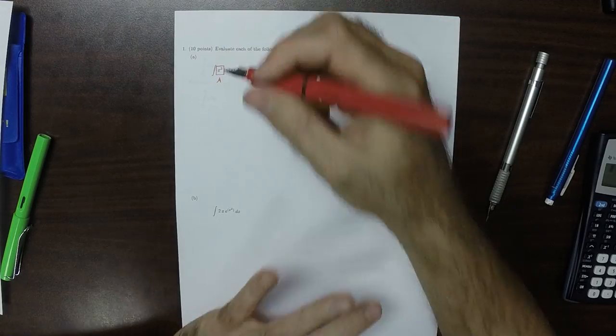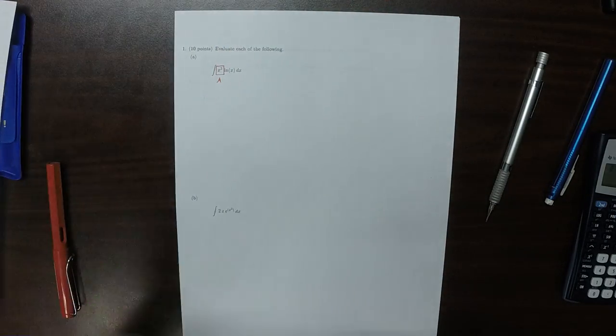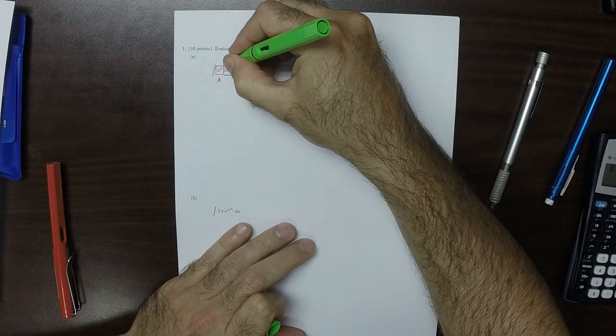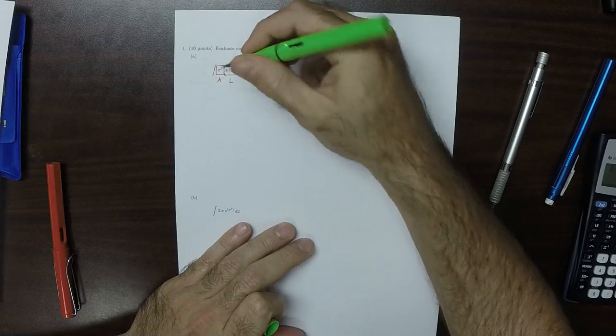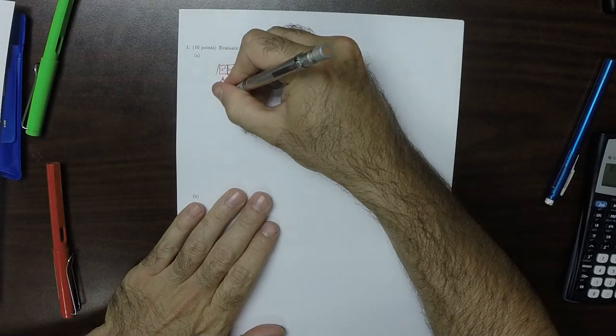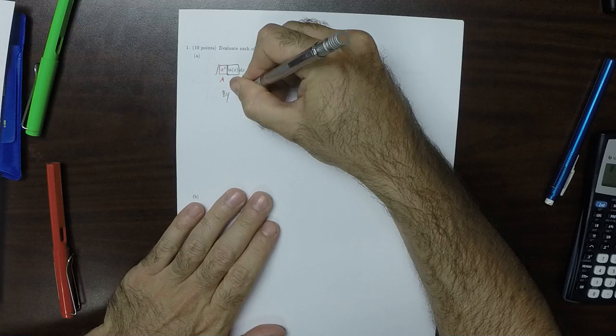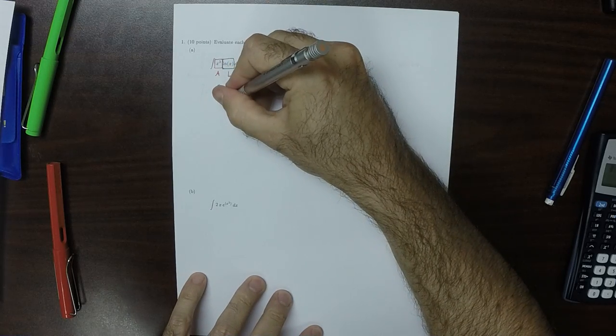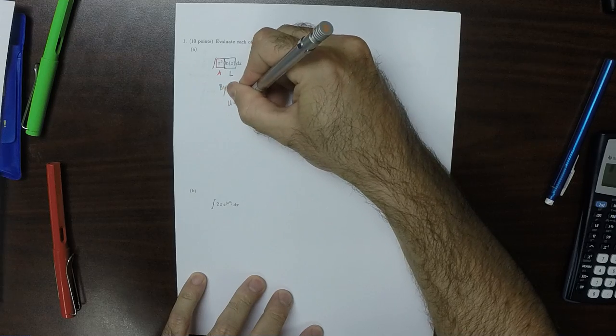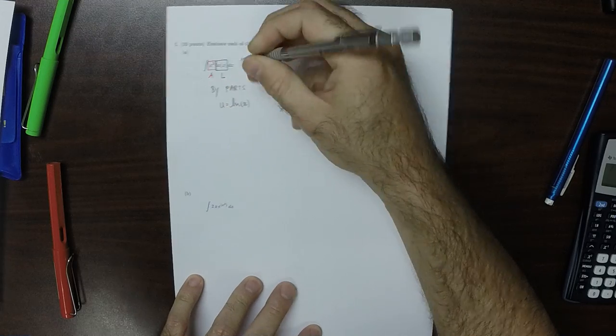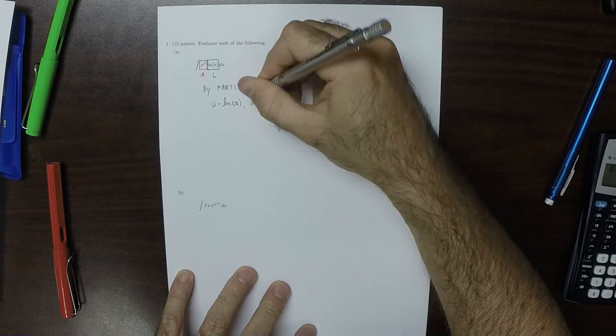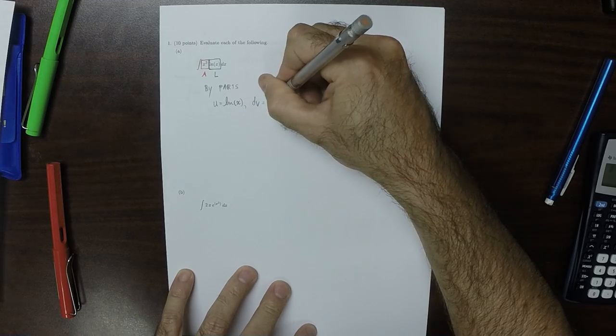So this is an algebraic factor and this is a logarithmic factor. And so in the integration by parts heuristic, this is saying that we should take u is log x and dv is x cubed dx.